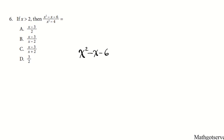Question 6. It says if x is greater than 2, what is (x squared minus x minus 6) over (x squared minus 4)? The question is: is this reducible? Can I factor out something from these two polynomials? In order to see if they have a common factor, I have to factor them completely first — express them as a product of their factors. Let's factor them one at a time and see if anything cancels.